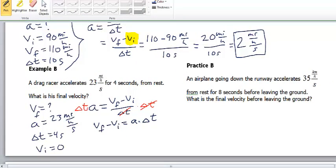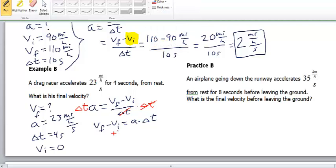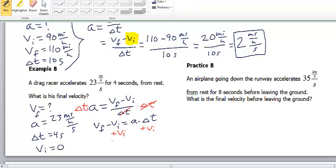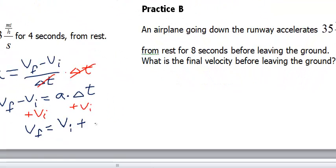And, now we can do one more algebraic manipulation. We can add VI to both sides to get V final by itself. So, V final equals V initial plus acceleration times time interval. Now, we can plug in our values. Now, we have a good form for this equation.